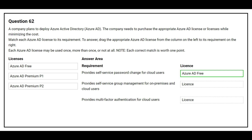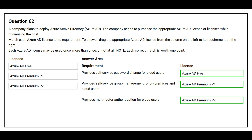The second requirement is to provide self-service group management for on-premises and cloud users. The correct license is Azure AD Premium P1. The third requirement is to provide multi-factor authentication for cloud users. The correct license is Azure AD Premium P2.